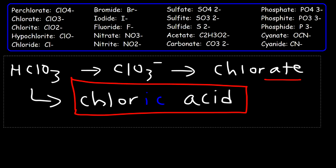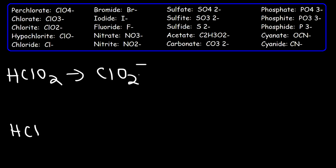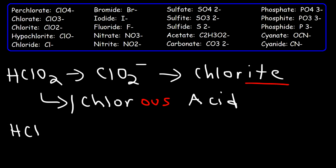Now let's try some other examples. Write the name of the acid HClO2 and also HCl. Step one: identify the ion. If we remove the hydrogen atom from HClO2, we're left with the ion chlorite. When you have the suffix '-ite', you need to replace it with '-ous'. So instead of chlorite, it's going to become chlorous, and then we write the word 'acid' — chlorous acid.